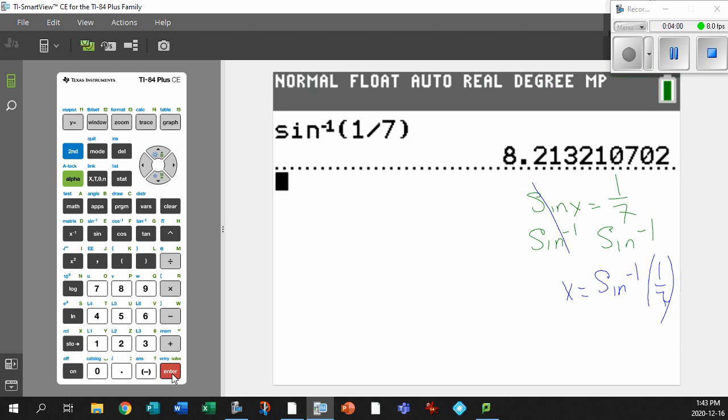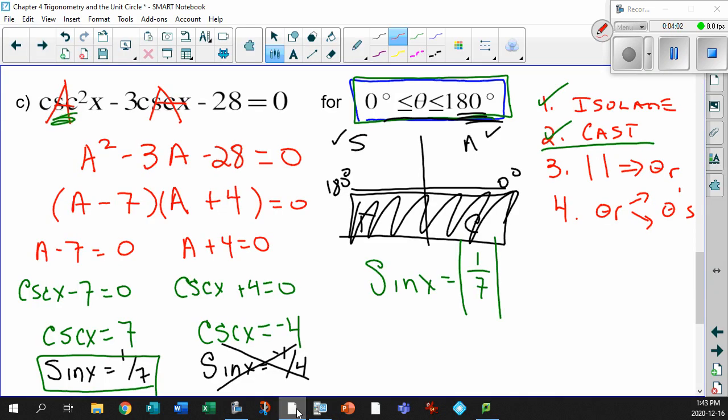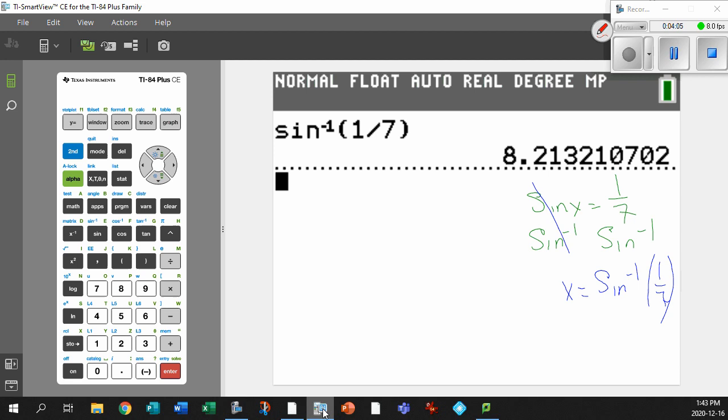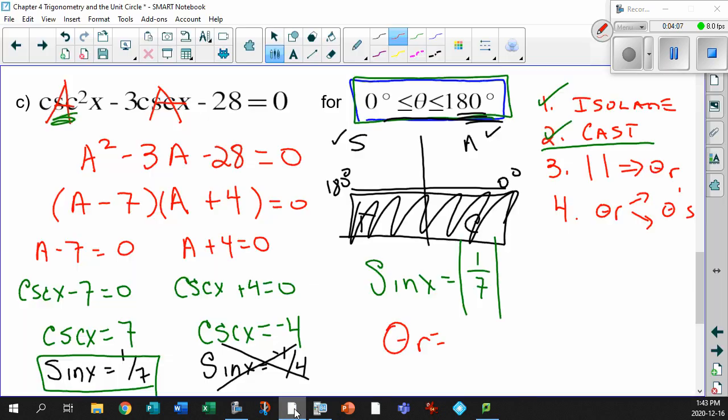There's your theta reference. Your theta reference, then, is 8.2 degrees. Now, remember, according to your cast rule, it could be here, or it could be here, because those are the two positive areas for sine. So let's let that be 8.2 degrees. Let's let that theta reference be 8.2 degrees, and let's figure it out.